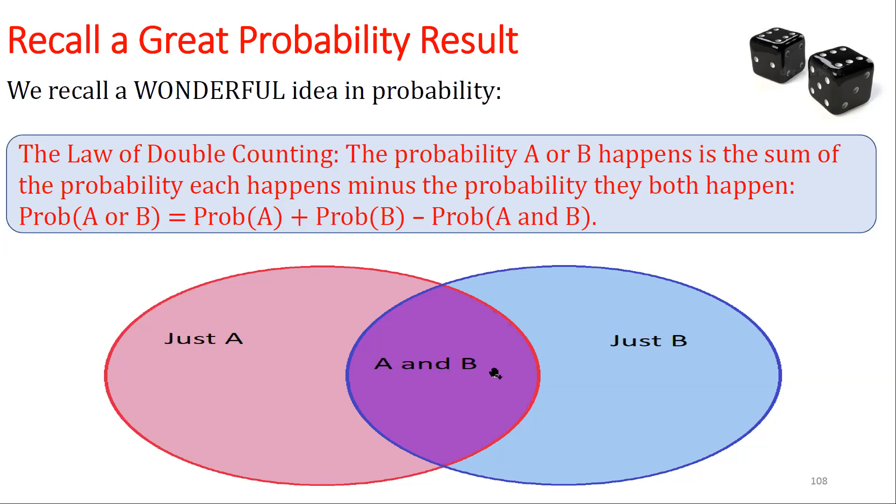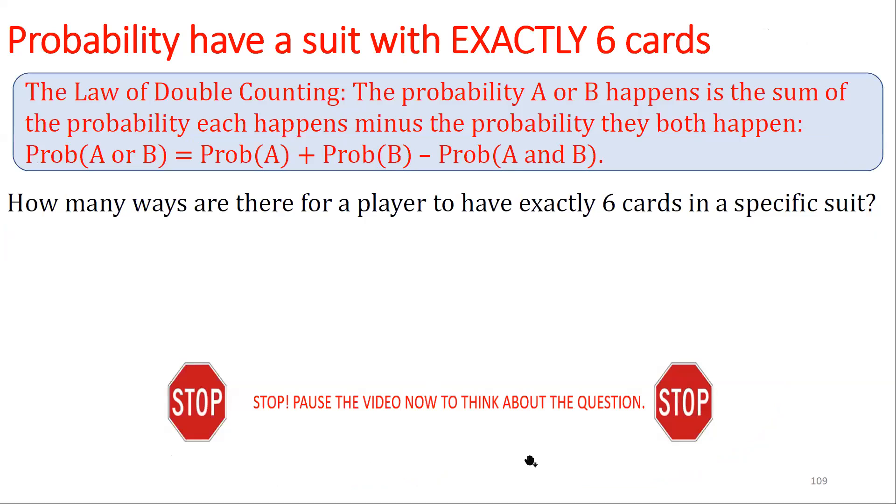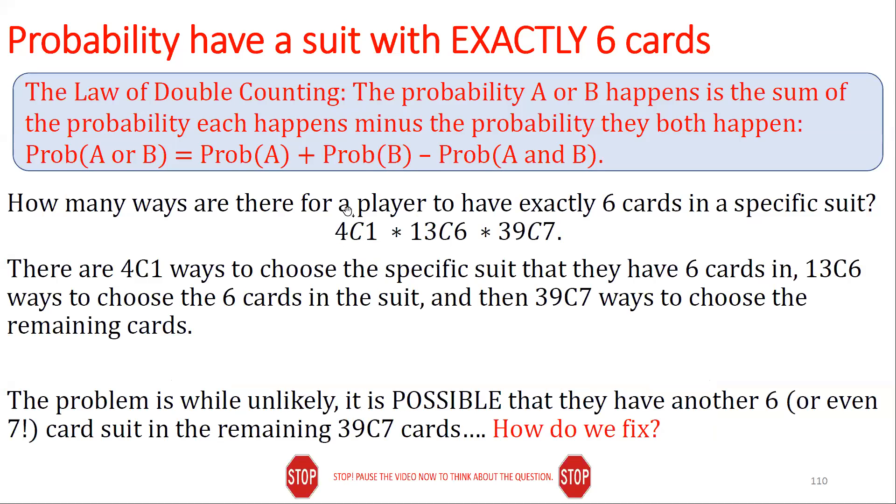So how does this change? There's 4C1 ways to choose the specific suit we care about. Then we have to choose 6 cards from that suit, order doesn't matter, so 13C6. And then finally we have 7 cards that we have to take from the remaining 39, so 39C7. The problem with this is that you could be in the unlikely situation where you have two 6-card suits, or even worse, a 6-card suit and a 7-card suit. That is possible in that 39C7. So how do we fix this?